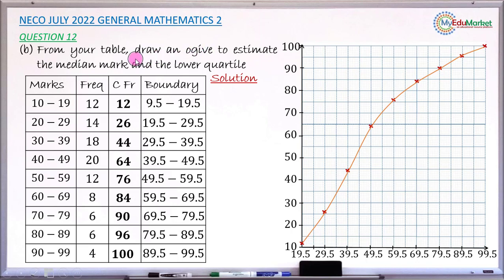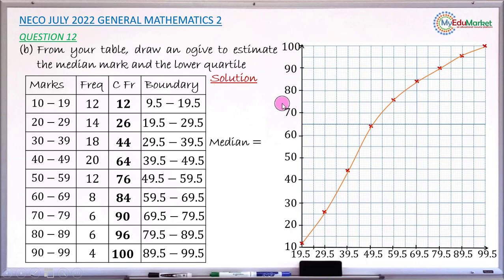Still in question (b), we estimate the median mark and the lower quartile. The median is the mark obtained by the middle student when arranged in ascending order. With 100 students, the middle position is position 50.